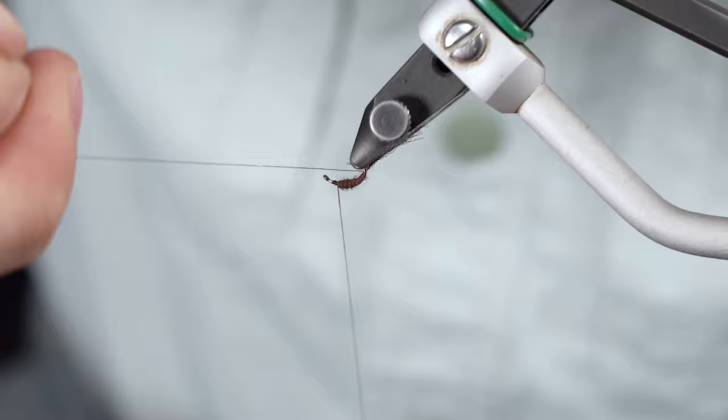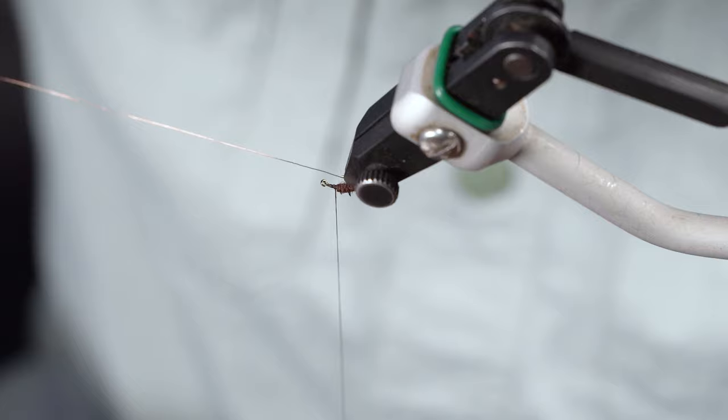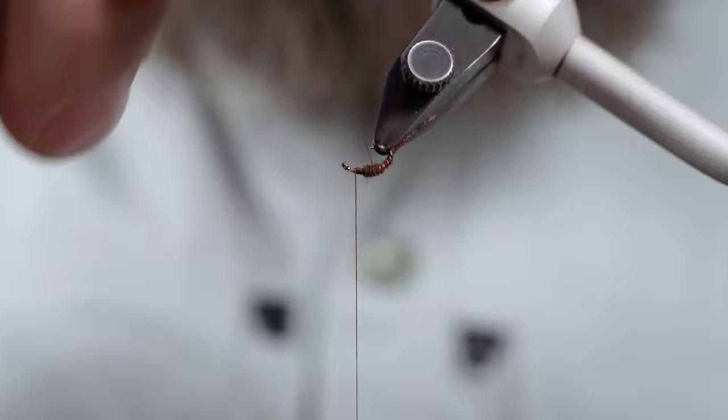If you're tying a dozen or two dozen of a fly, you're not super particular on how the ribbing turns out. You just want to get the ribbing on there and move on with the fly.